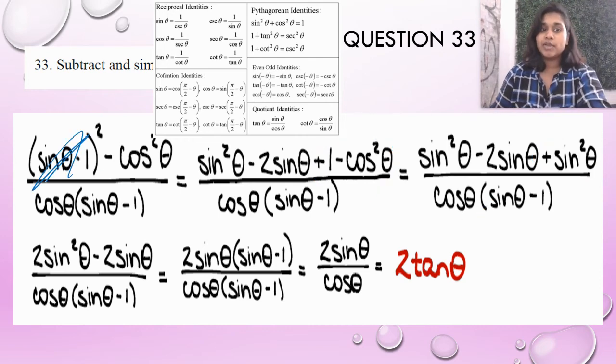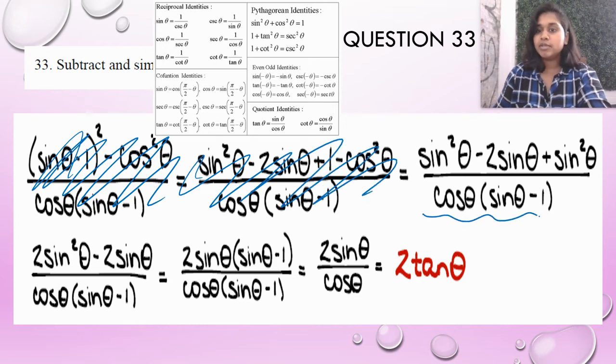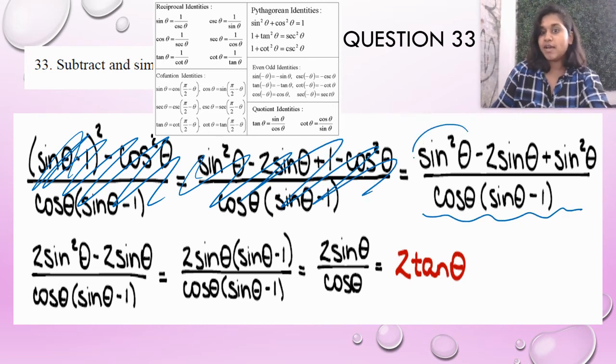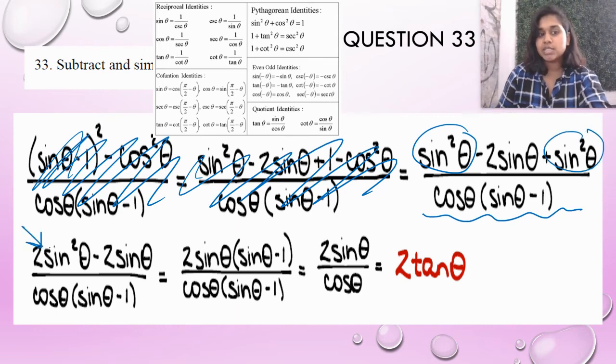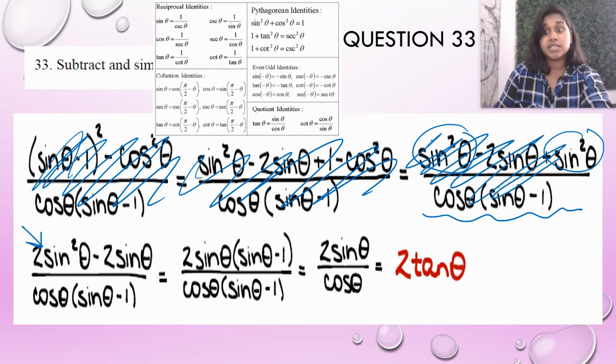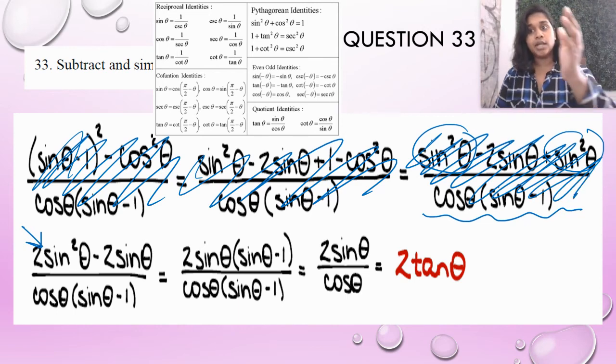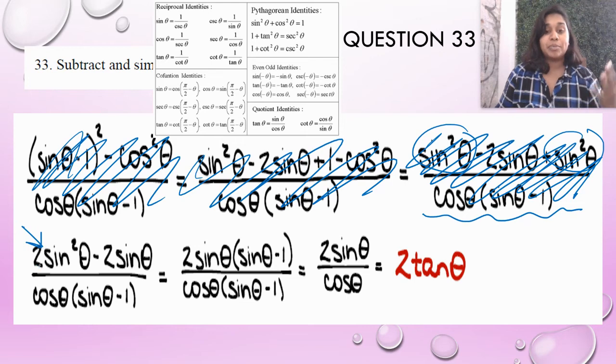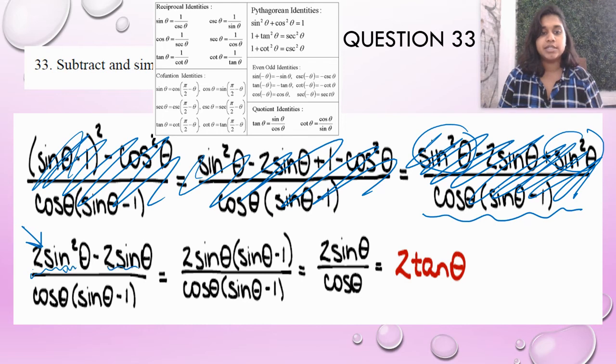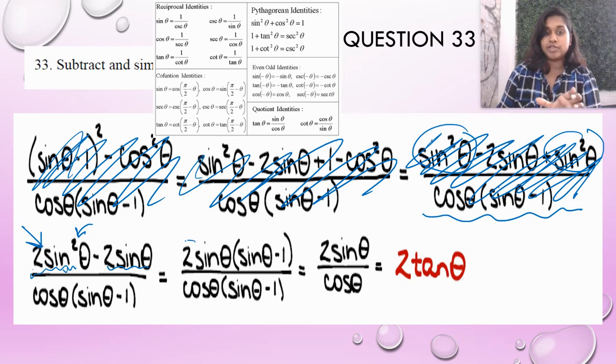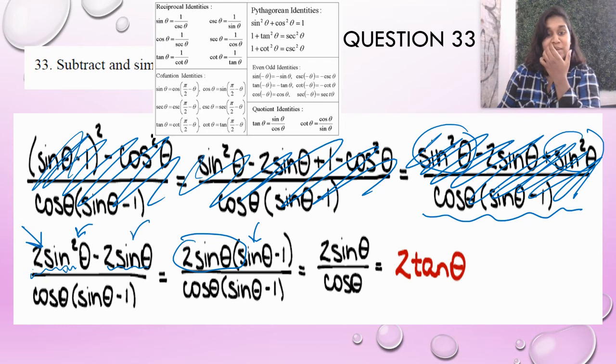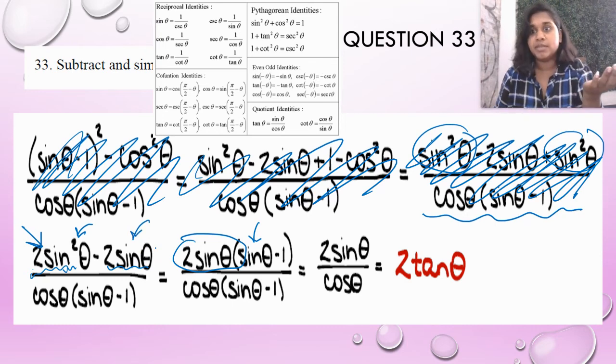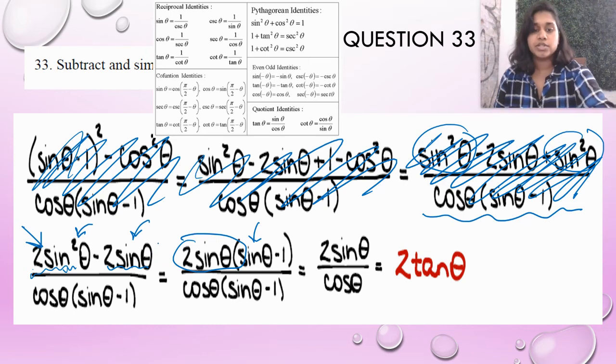This now becomes this. If I have one sine squared and another sine squared, that ends up being 2 sine squared thetas. I still haven't dealt with that denominator. Now on top, I've got a repeated 2 sine that I can factor out. I factored out 2 sine theta and was left with sine minus one.